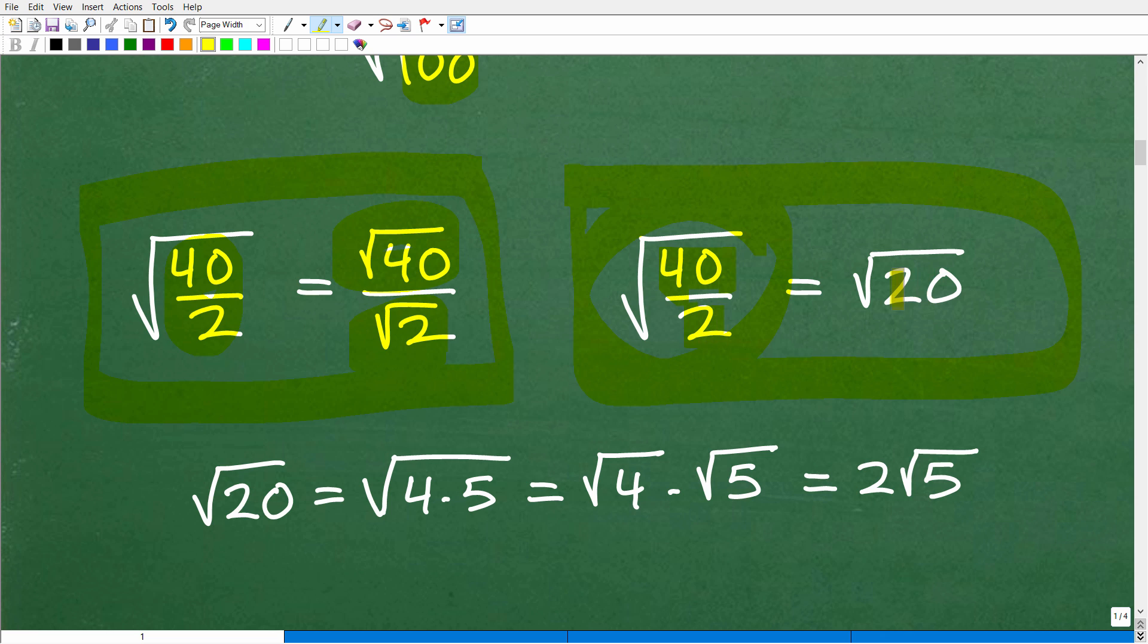Square root of 40 over 2. Well, 40 divided by 2 is 20. So maybe I could just simplify this. And that's exactly what you want to do. So when you can divide these fractions, like in this case, 40 divided by 2, that's what you want to do. But the square root of 20 is not fully simplified. So I can break up 20 as 4 times 5. So this is what we're talking about here, simplifying square roots.